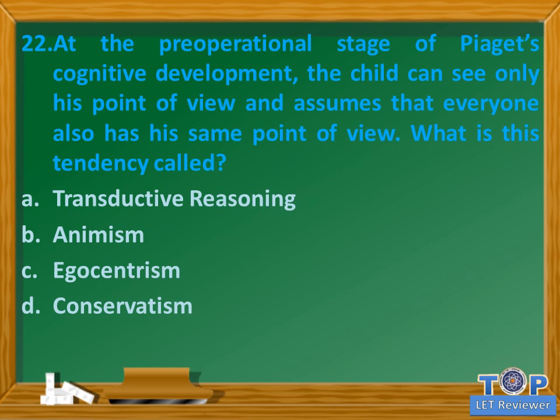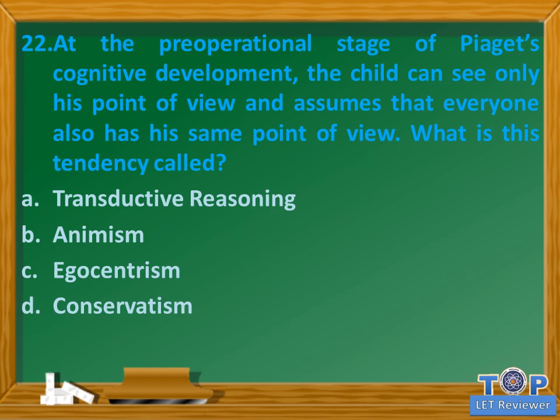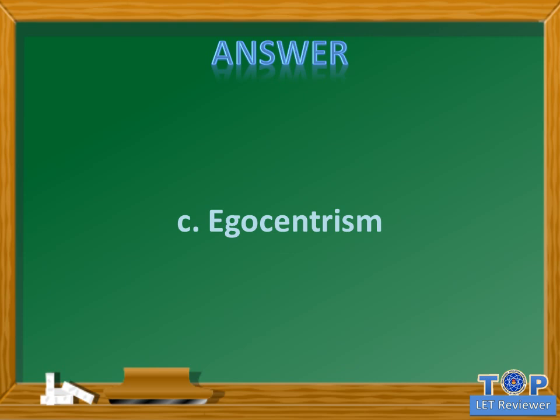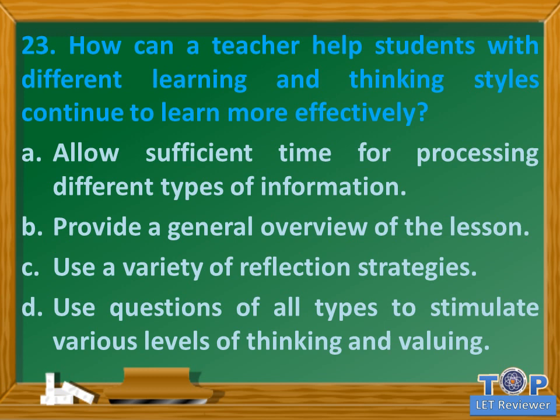Question number twenty-two: the child can see only his point of view and assumes that everyone also has his same point of view. What is this tendency called? A) transductive reasoning, B) animism, C) egocentrism, D) conservatism. Answer: C) egocentrism.